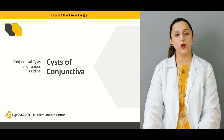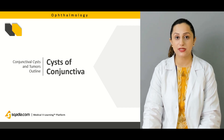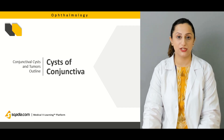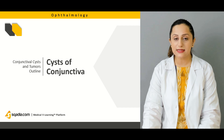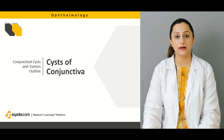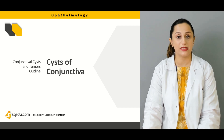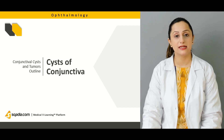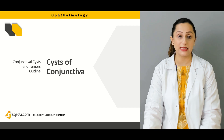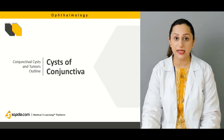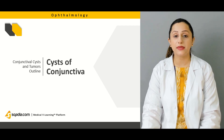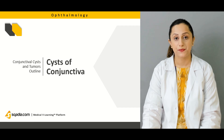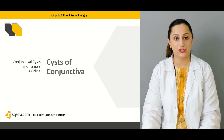First, we'll be discussing the cystic lesions of the conjunctiva. These cysts can be further classified into pigmented cystic lesions and non-pigmented cystic lesions. They can arise either congenitally or they can be acquired conditions of the conjunctiva.